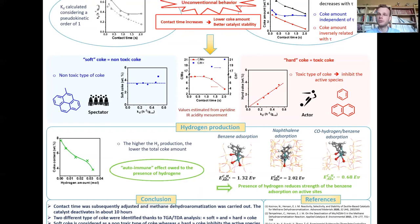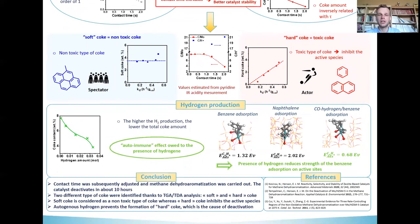So it is important not to forget that we produce hydrogen in the reaction. The higher the hydrogen production, the lower the total coke amount. So we decided to perform modeling with the reaction and we observed that when we absorb benzene and hydrogen over the same active site, we reduce the strength of the benzene absorption on the active site.